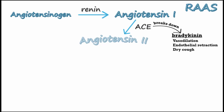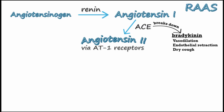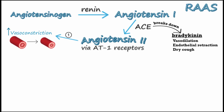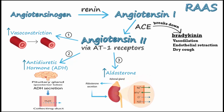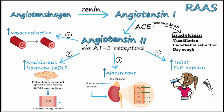The protein angiotensin 2 acts to increase blood pressure via its receptor, the AT1 receptor. It does this in several ways, including causing vasoconstriction, which increases systemic vascular resistance and therefore blood pressure. It also increases anti-diuretic hormone, which causes the collecting duct of the kidney to retain more water in the blood, increasing blood volume and therefore blood pressure. Angiotensin 2 also causes an increased release of aldosterone from the adrenal cortex, which causes the kidney to retain salt and water, increasing blood volume. Lastly, angiotensin 2 causes an increase in thirst and salt appetite, also increasing blood volume and therefore blood pressure.